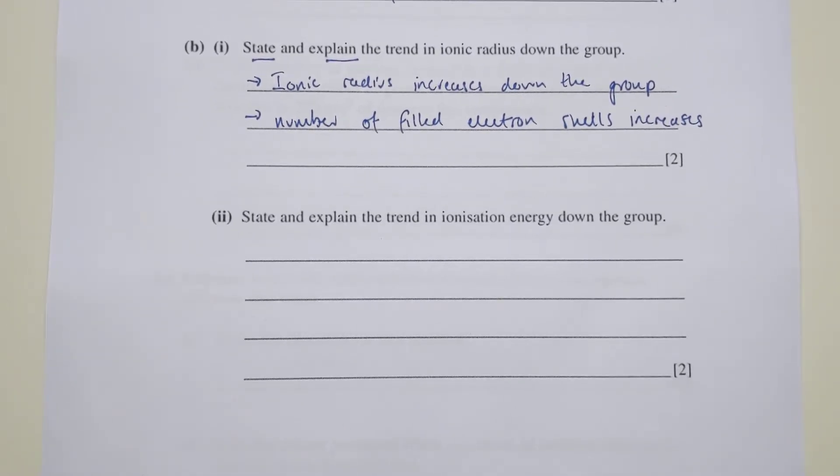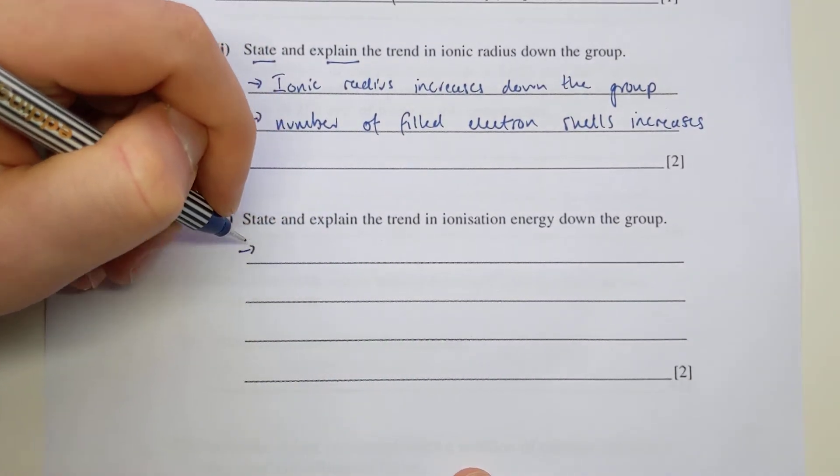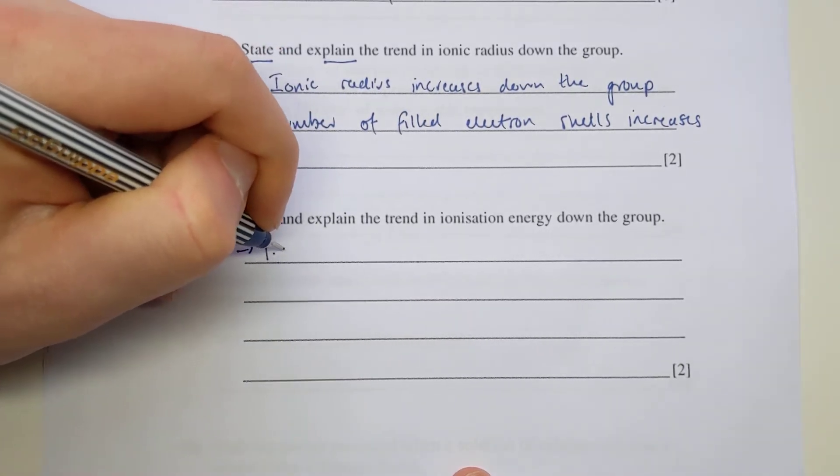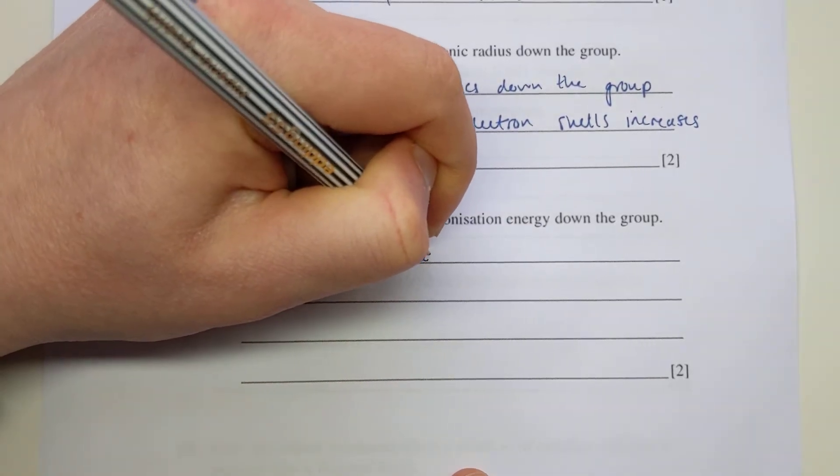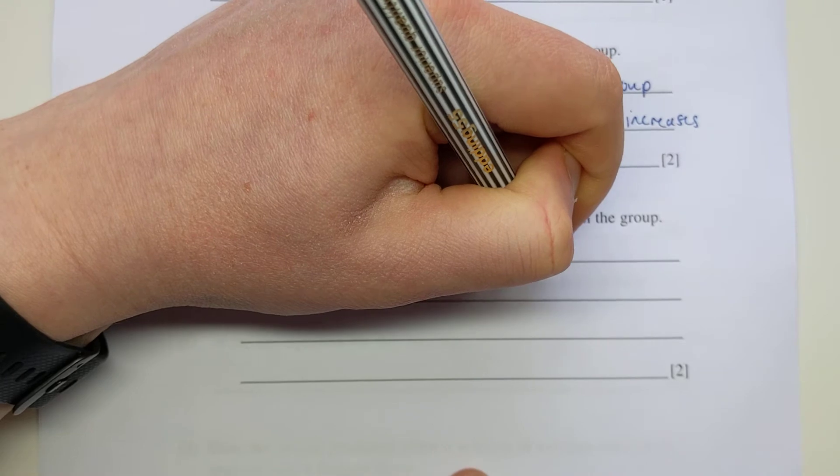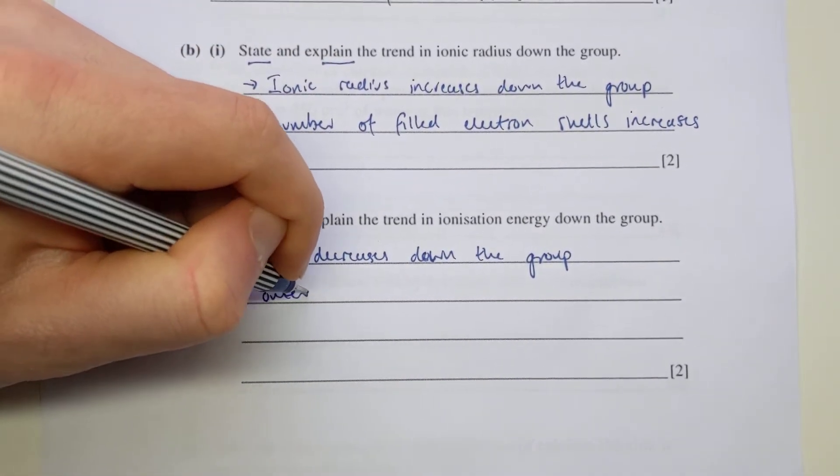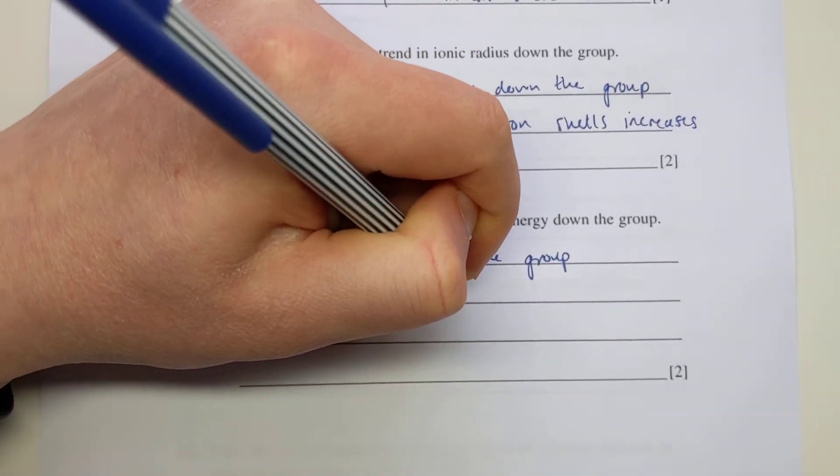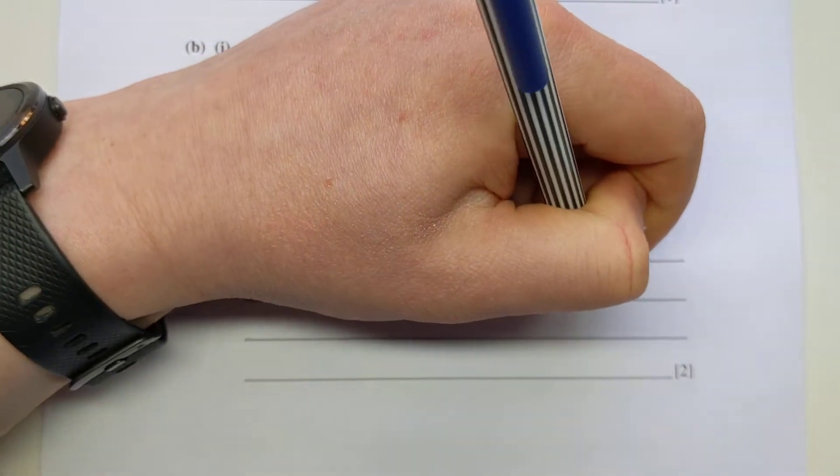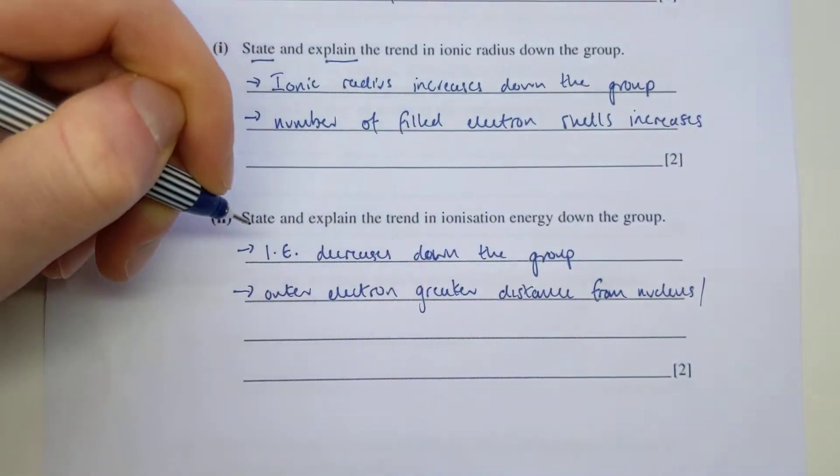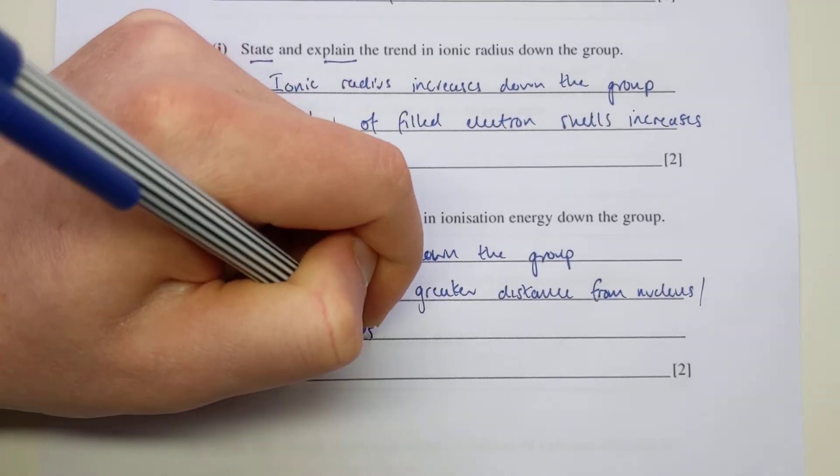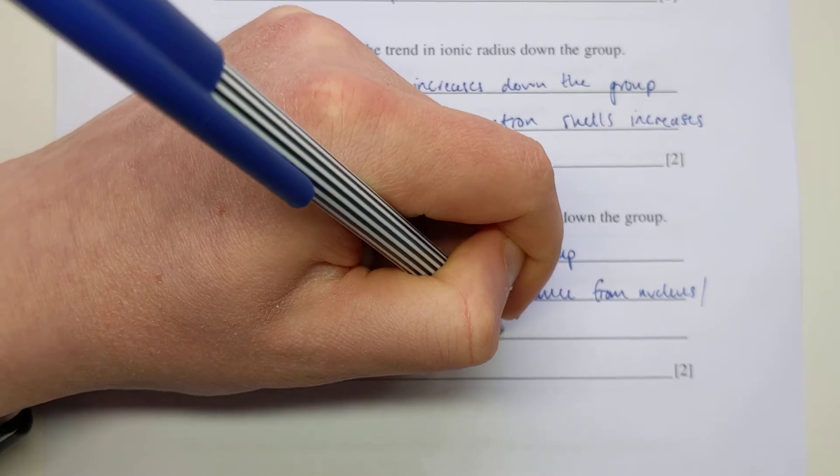Part two: similar question - state and explain the trend in ionization energy down the group. First, the statement straight out of your notes: the ionization energy decreases down the group. The second mark is for the explanation. There's loads of detail you could put in that explanation, but looking for any kind of one acceptable part gives you a mark. Either distance increasing or shielding increasing - either one is fine. So outer electron is at greater distance from the nucleus, or you could mention there's increased shielding from filled inner shells.